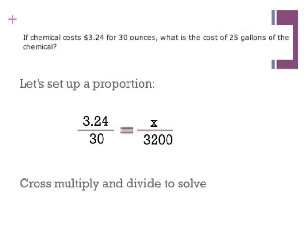Now, if we set up the proportion based on $3.24 is to 30 ounces, then the other ratio would be an unknown amount is to 3200 ounces. We cross-multiply and divide to solve for x.